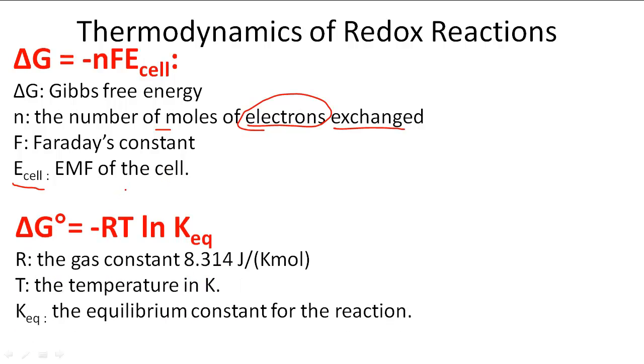We also have an equation for when we arrive at the standard Gibbs free energy. So here it's actually going to equal negative RT natural log of K_eq. K_eq stands for the equilibrium constant of the reaction, T stands for the temperature in Kelvins, and R is the gas constant 8.314 joules per Kelvin mole.